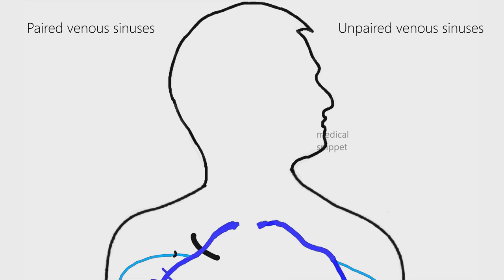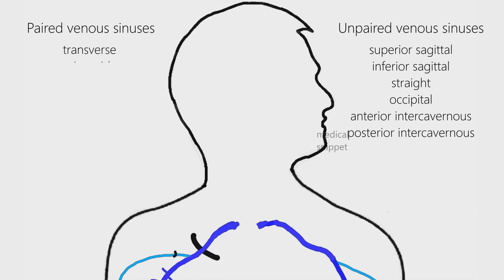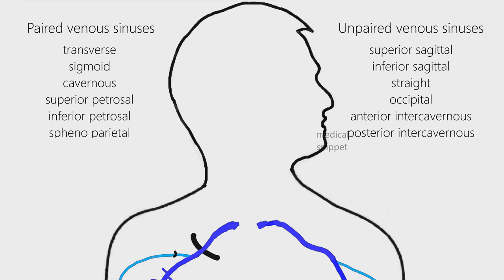The unpaired sinuses are the superior sagittal, inferior sagittal, straight, occipital, anterior, and posterior intercavernous sinuses. The paired sinuses are the transverse, sigmoid, cavernous, superior petrosal, inferior petrosal, and sphenoparietal sinuses.